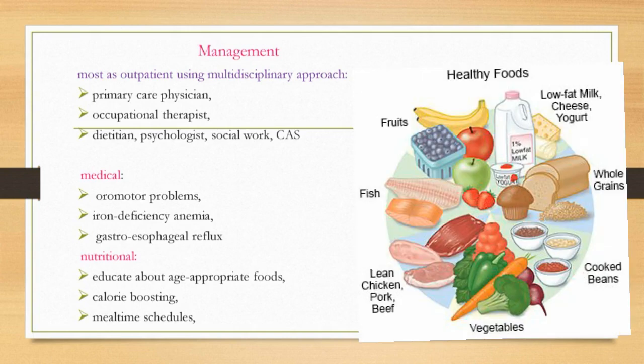Failure to Thrive management is most often outpatient using a multidisciplinary approach. This includes a primary care physician, occupational therapist, dietitian, psychologist, social worker, and child aid society. Manage medical conditions such as oral motor problems, iron deficiency anemia, and gastroesophageal reflux.